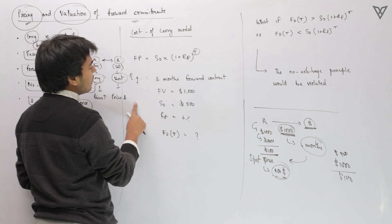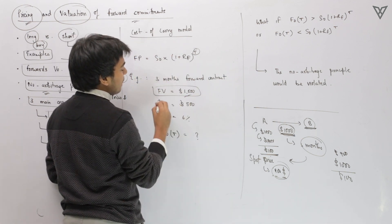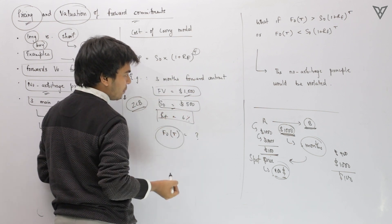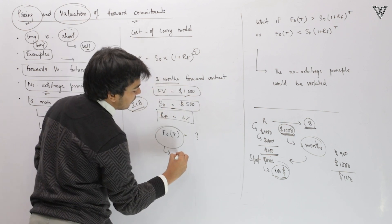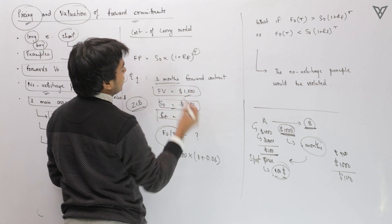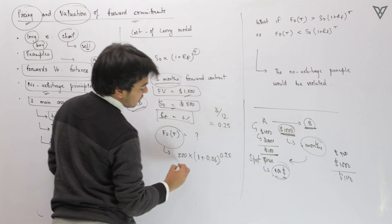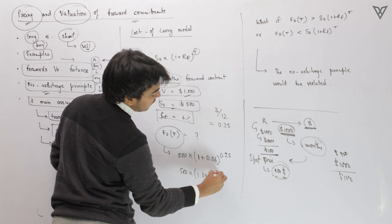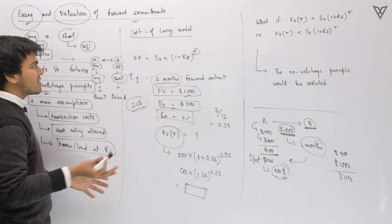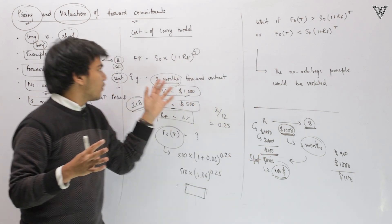Let me give you an example. There is a bond whose face value is $1,000, the current spot price is $500, it is a zero coupon bond, and the risk-free rate is 6%. Calculate the three-month forward price. You start with the spot price of $500 and multiply by (1.06)^(3/12), which is (1.06)^0.25. So calculate $500 × (1.06)^0.25. The cost-and-carry model governs this forward price: spot price × (1 + rf)^T, adjusted for any costs or benefits at their present values.